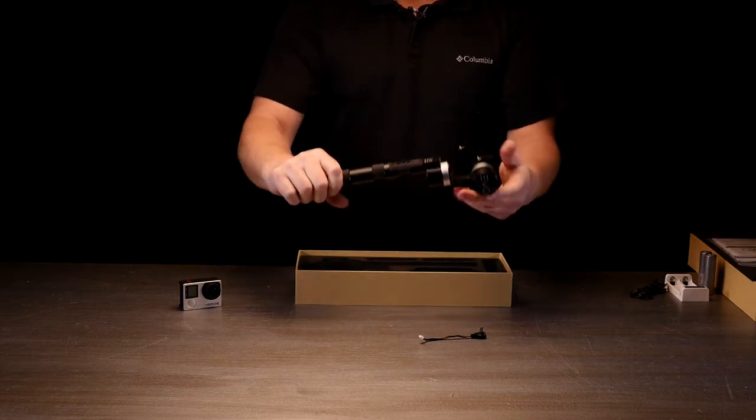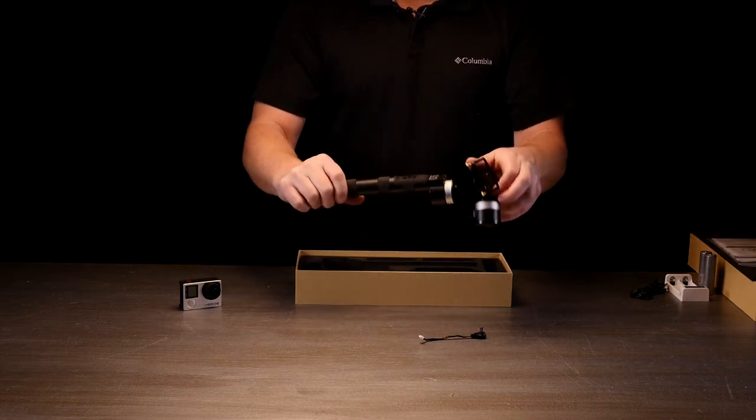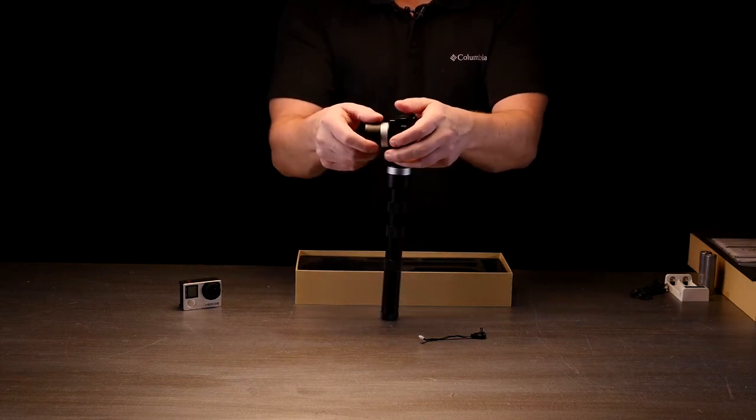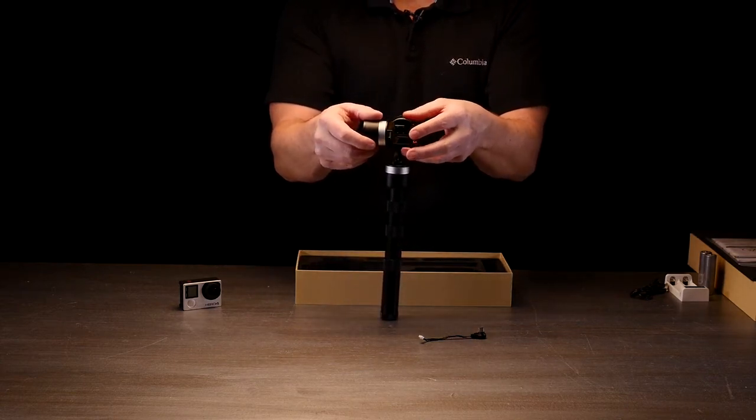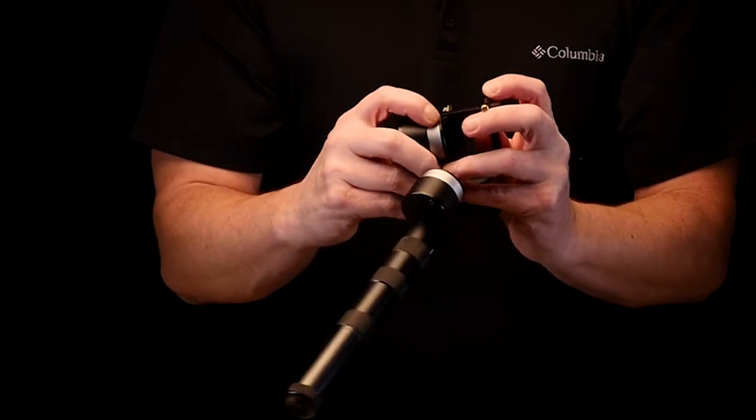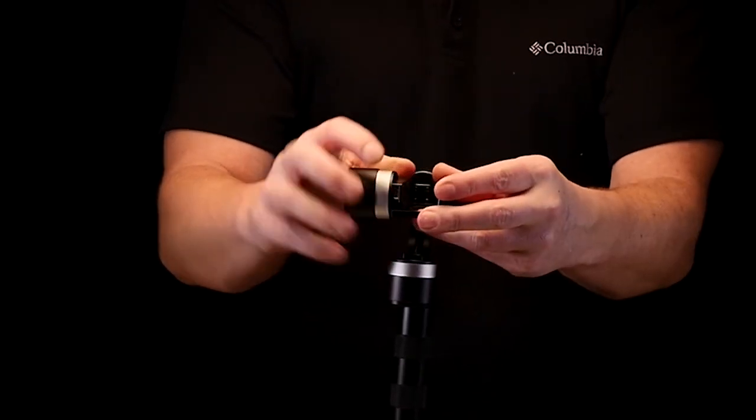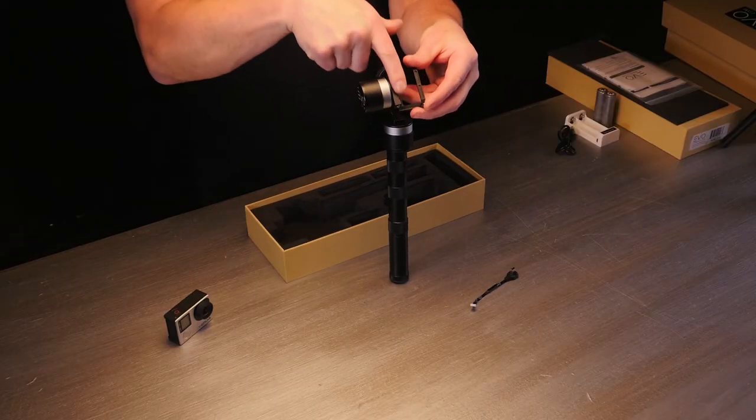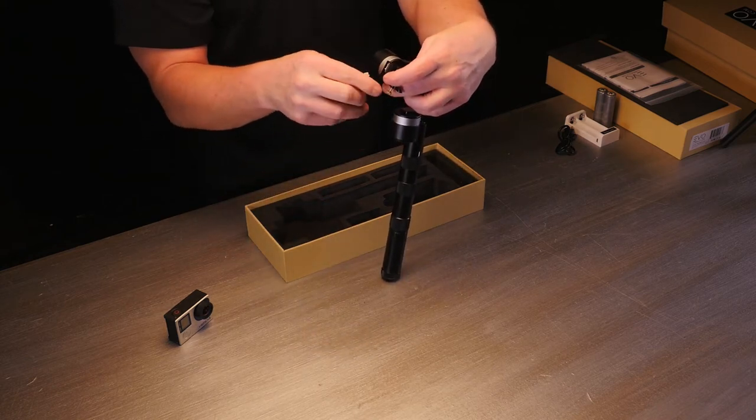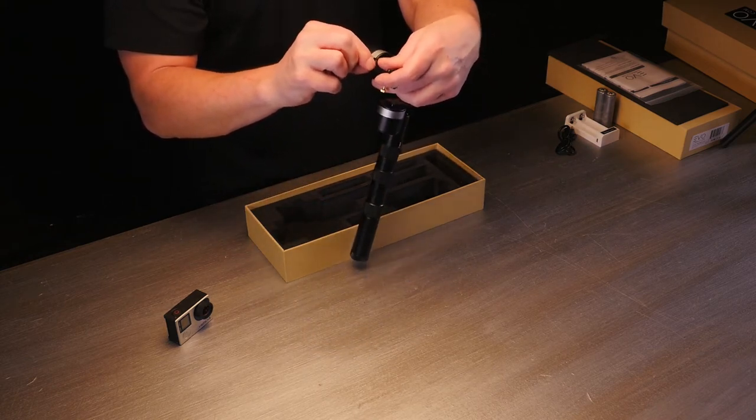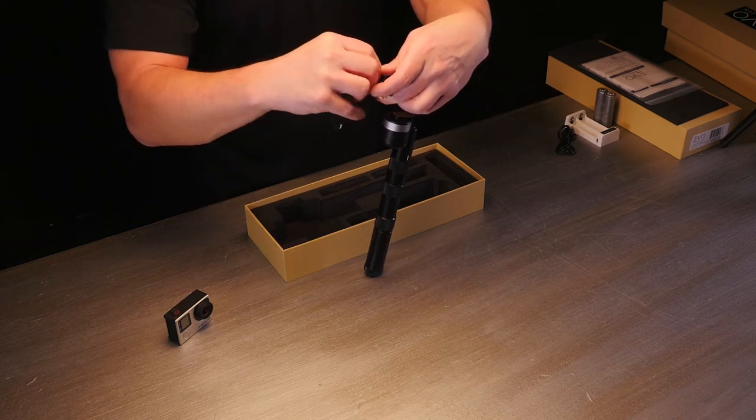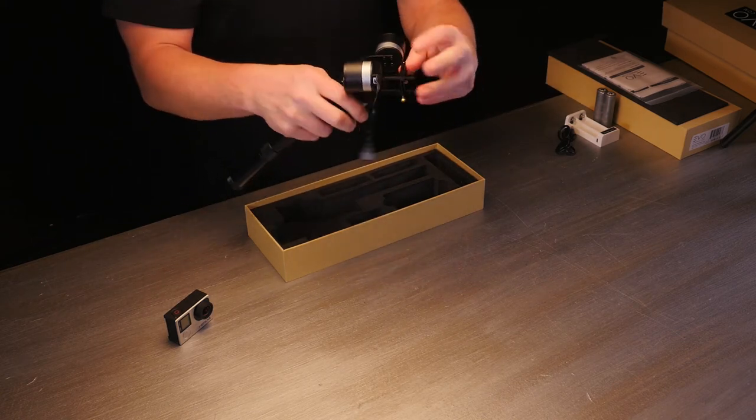Super simple. Now on the GoPro we do have a charge plug. If you look right underneath this motor right here, there's a little white plug that's actually on this part right here of the gimbal. That little white plug gets plugged in and then this plugs into your GoPro so you can actually charge your GoPro with the batteries that are in the gimbal here.